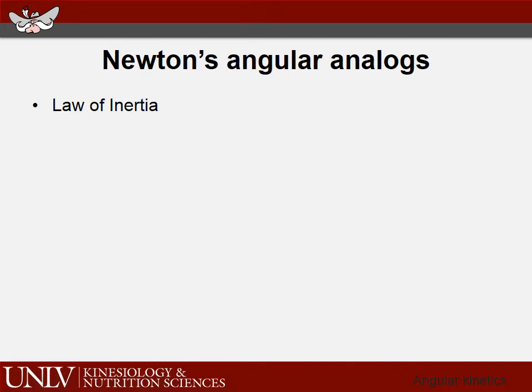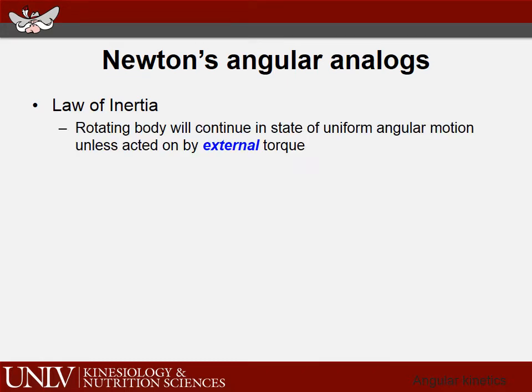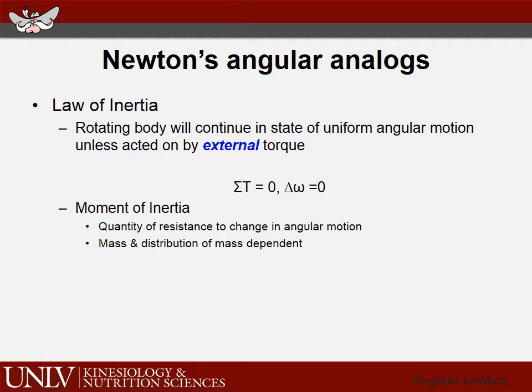Now let's talk about how we convert Newton's three laws of motion to the angular analogs — it's very easy. All you do is put the angular component in. For the law of inertia: a rotating body will continue in a state of uniform angular motion unless acted on by an external torque. The sum of torques equals zero; therefore the change in angular velocity (delta omega) is zero. The moment of inertia is the quantity of resistance to the change in angular motion. The key difference from the linear component is that this takes into account the distribution of masses, not just mass alone.